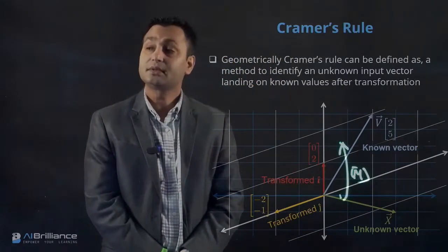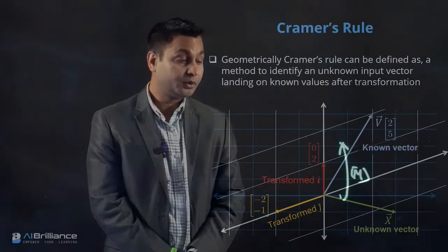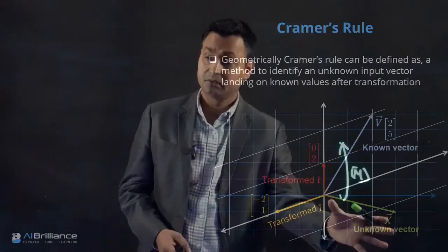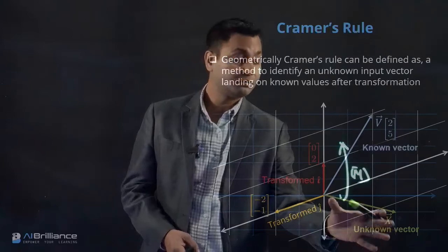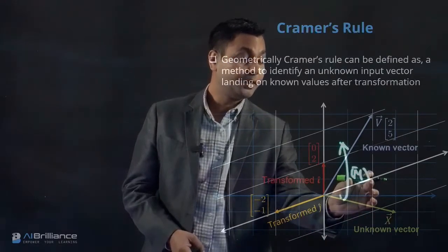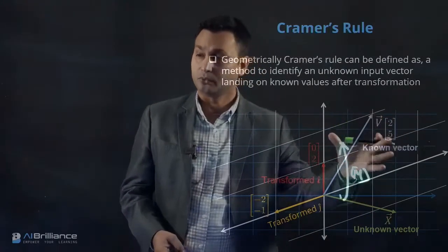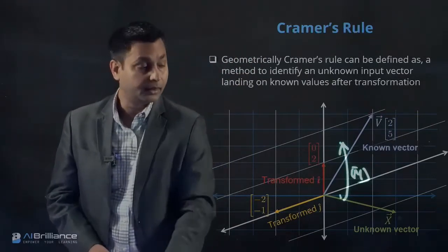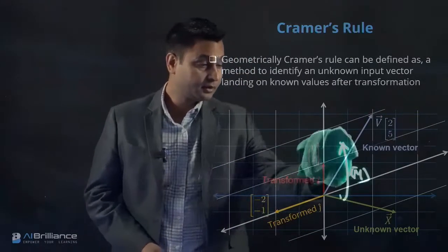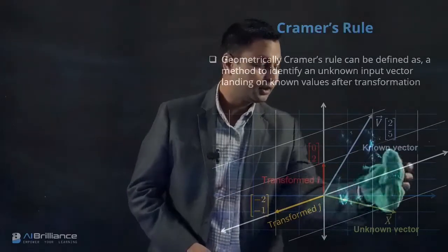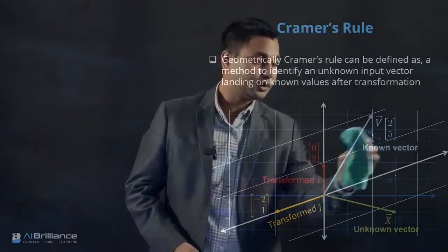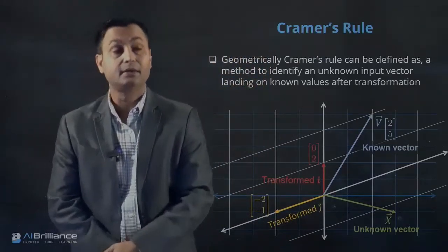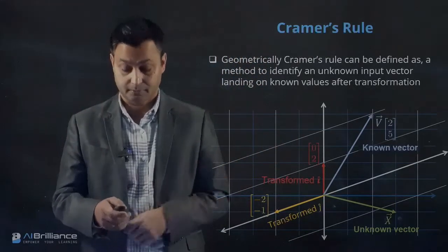This is essentially the geometric interpretation of solving a set of linear equations: what is the unknown vector which, when multiplied by the matrix, transforms into the known vector? We have seen some solution approaches previously, but today we are focusing on Cramer's rule and understanding its geometric intuition to solve this problem.